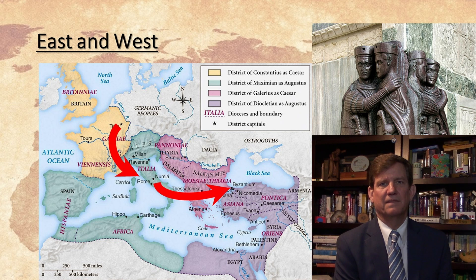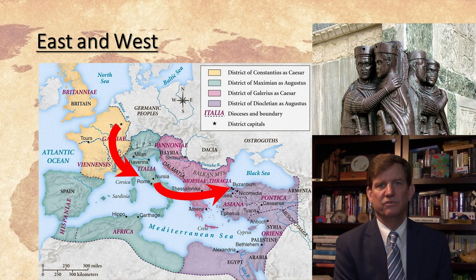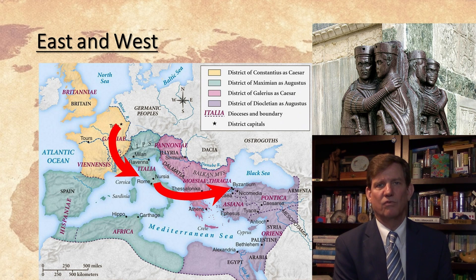Diocletian had hoped that by giving an Augustus in Rome half of the empire, he would provide stability. Each of the Augustuses — one in Rome, one in Byzantium — would then have and choose a Caesar. Once an Augustus died, the Caesar would step up, providing a formal role of succession.